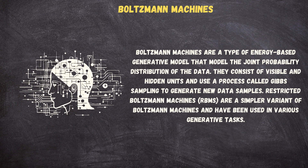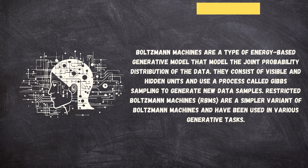Boltzmann machines are a type of energy-based generative model that model the joint probability distribution of the data. They consist of visible and hidden units and use a process called Gibbs sampling to generate new data samples. Restricted Boltzmann Machines (RBMs) are a simpler variant of Boltzmann machines and have been used in various generative tasks.